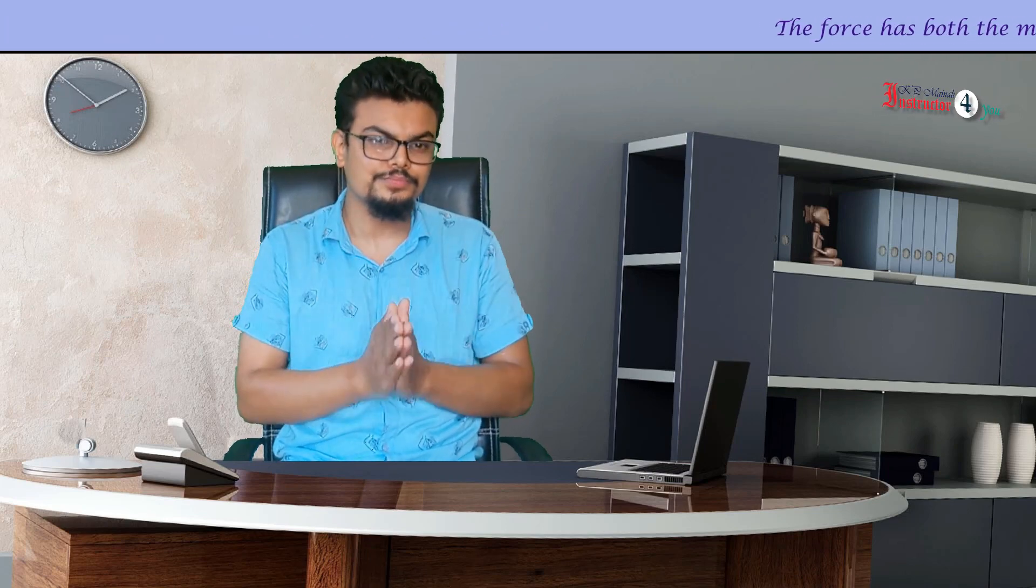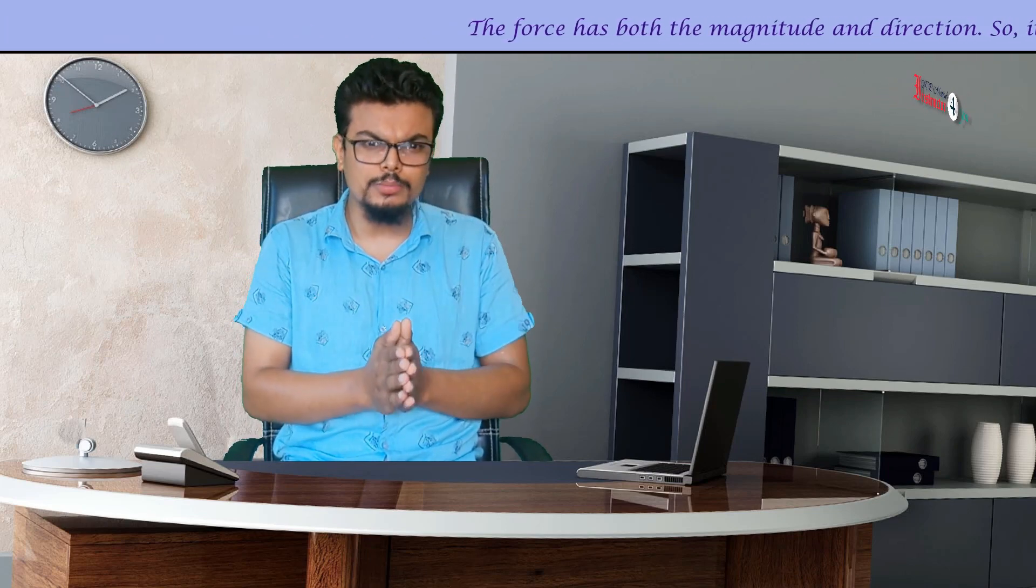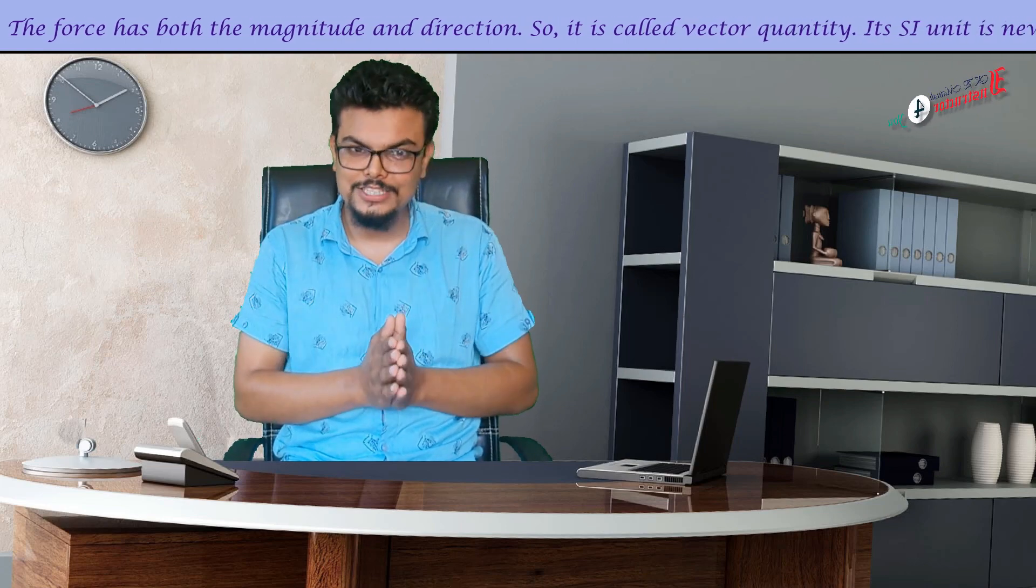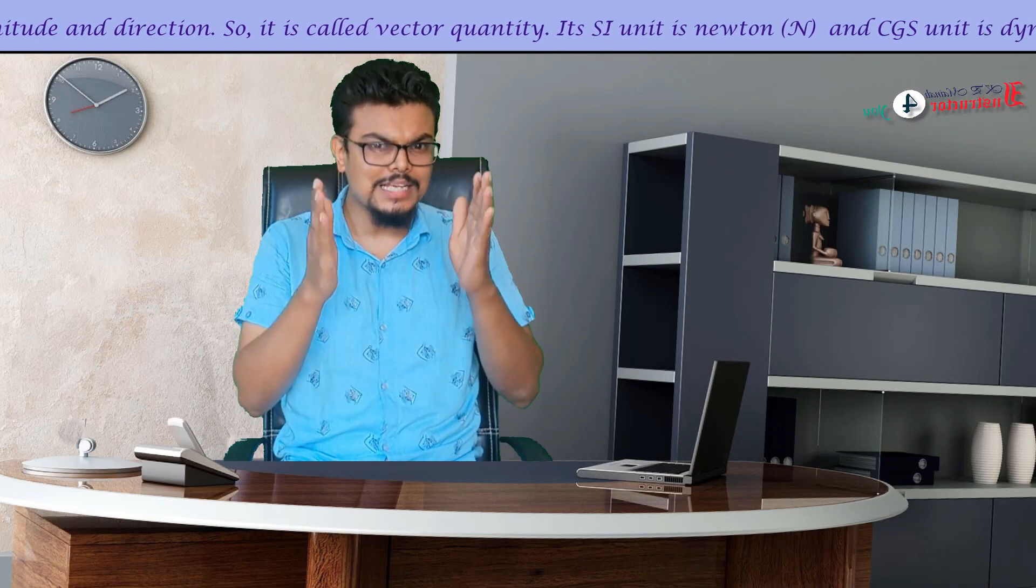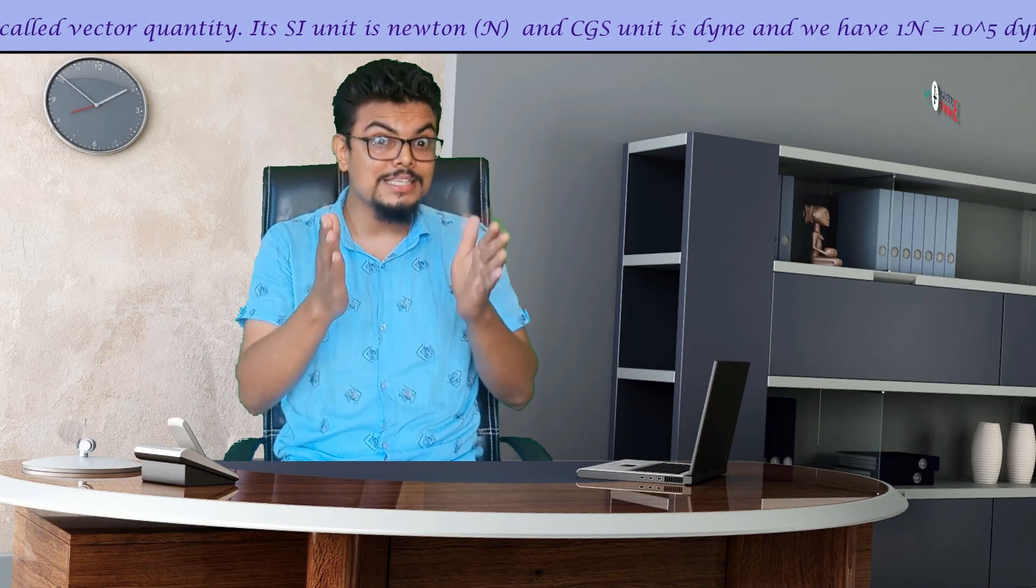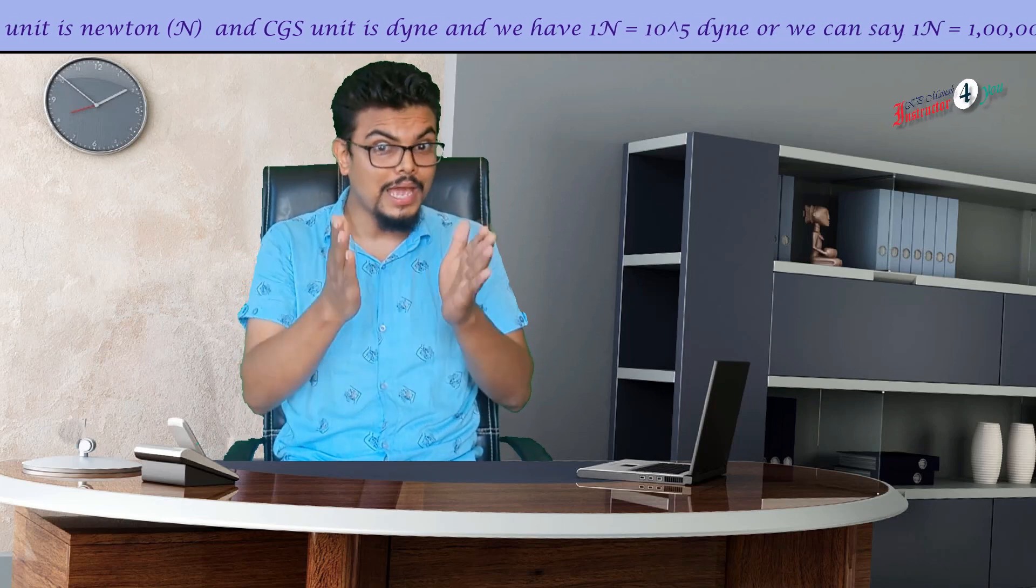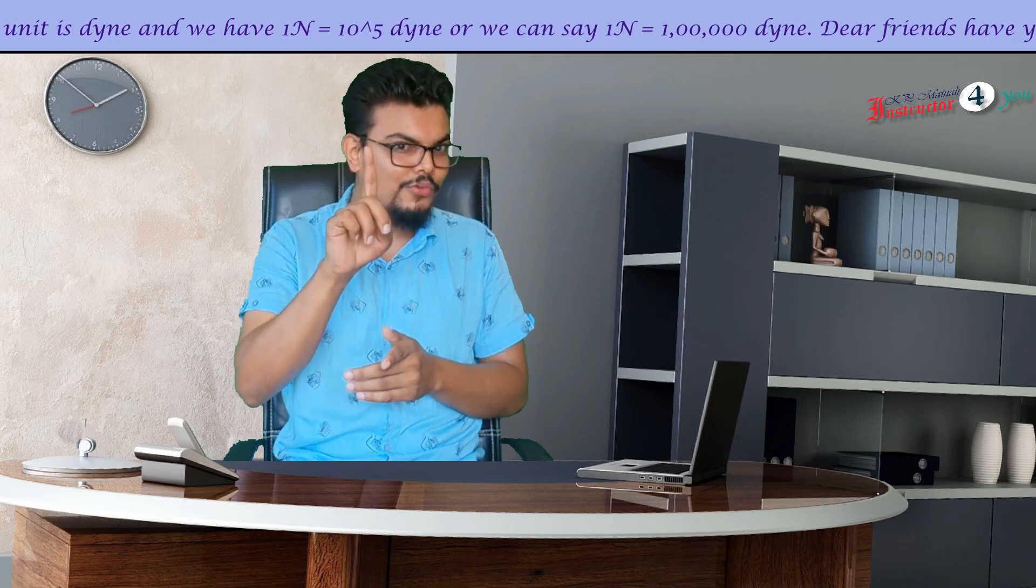The force has both magnitude and direction, so it is called a vector quantity. Its SI unit is Newton and CGS unit is Dyne, and we have 1 Newton equal to 10^5 Dyne.